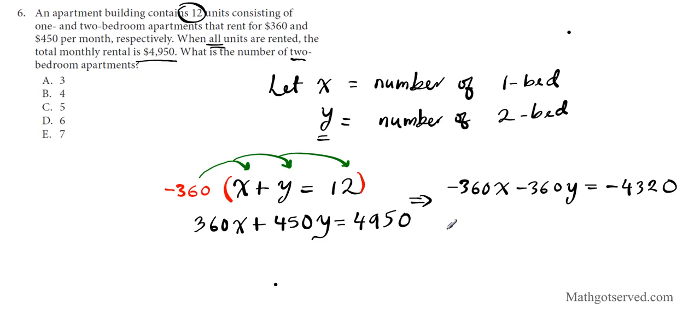I'm going to distribute this negative 360 to all three terms here. That's going to yield negative 360x and negative 360y and negative 4,320. I just move over equation 2, line it up perfectly, 360x plus 450y equals 4,950. We're going to combine the two equations by adding them. When I combine the two equations, these two are opposites by design to cancel out. So negative 360 plus 450 is 90y equals positive 630.